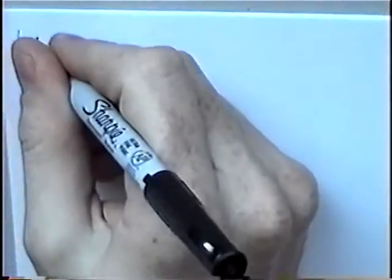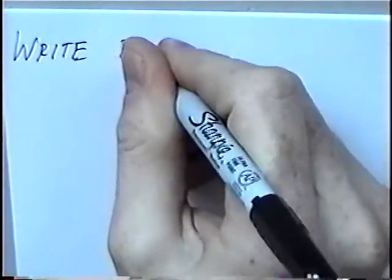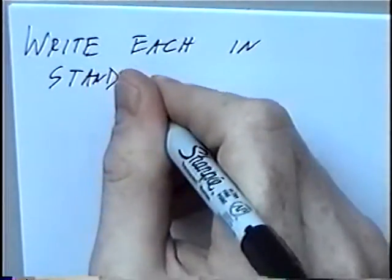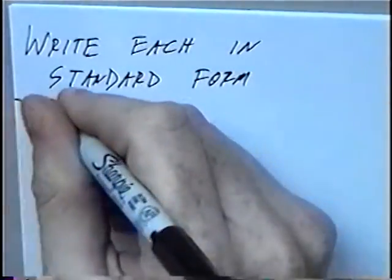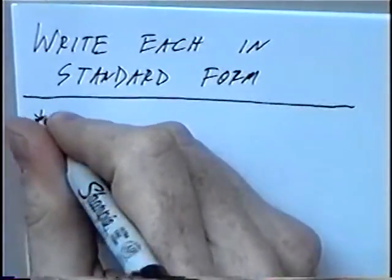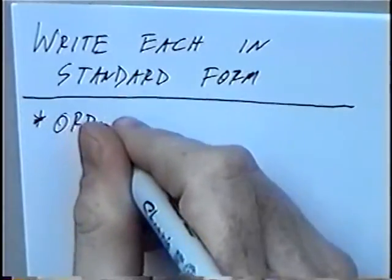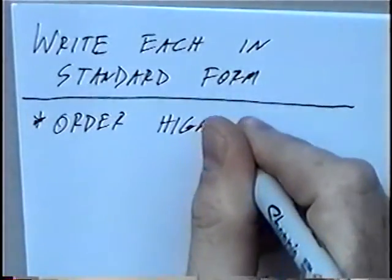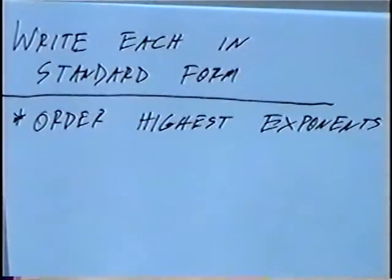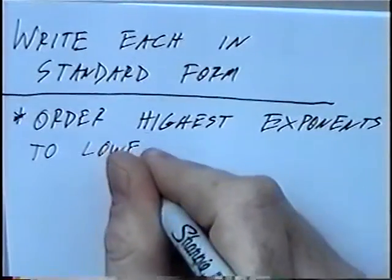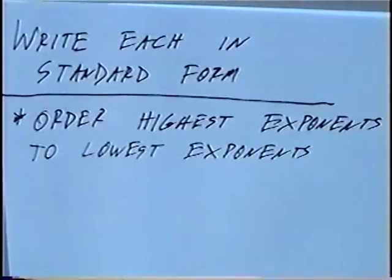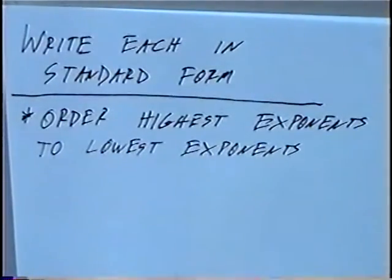The title of the last section today is: write each expression in standard form. In this section, we'll take each expression and write it in standard form. Standard form means ordering from the highest exponents to the lowest exponents.